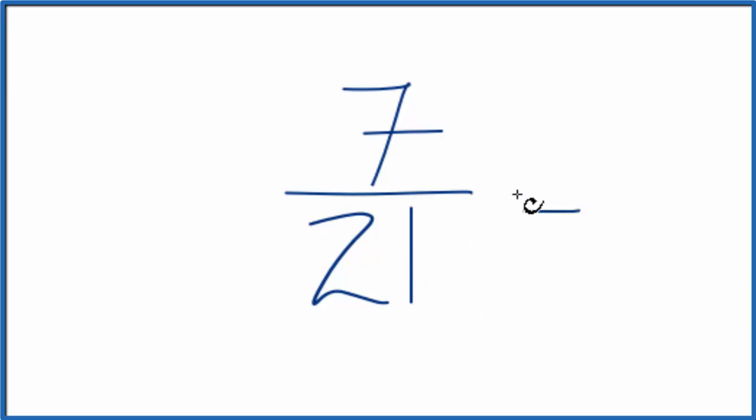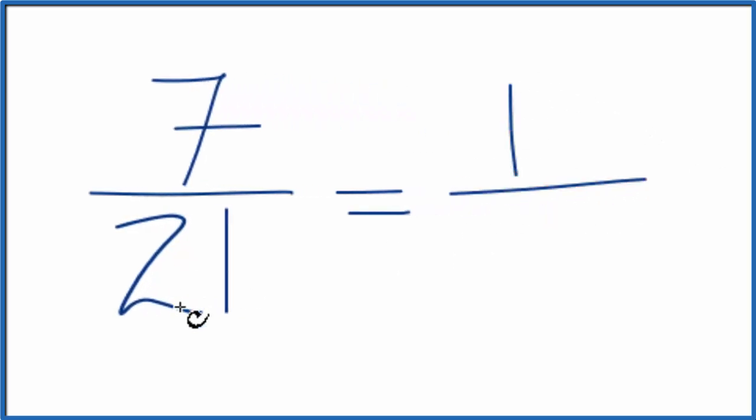So I can divide the numerator by 7. Seven divided by 7 is 1, and then the denominator, 21 divided by 7, gives me 3. So when I simplify the fraction 7/21, I get 1/3.